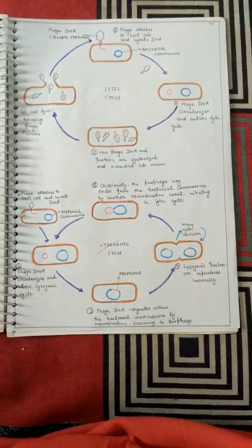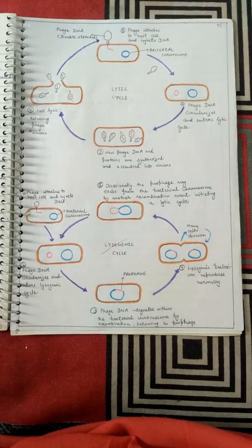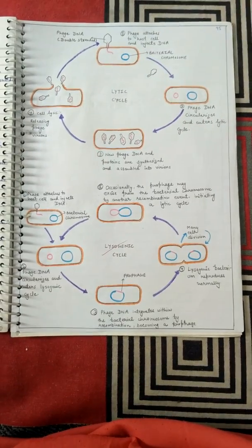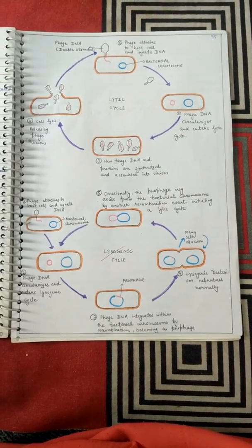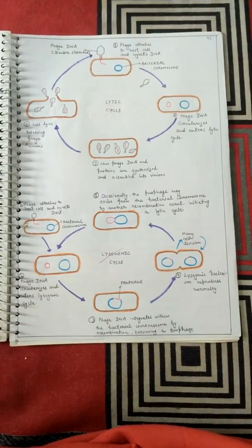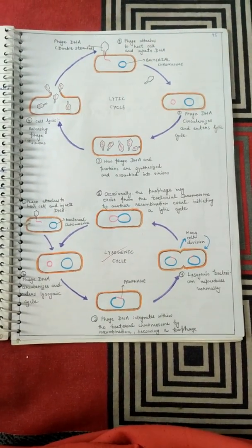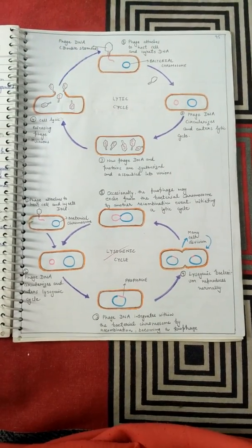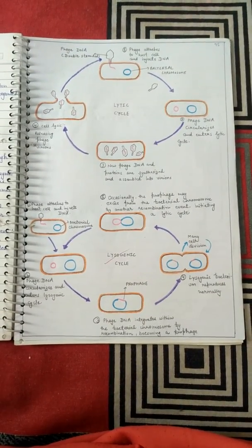The lytic cycle is also known as the virulent phase, because in the lytic cycle the bacteriophage feeds upon the bacteria and lyses the cell. In the lysogenic cycle, however, there is no lysis of the bacterial cell — only the multiplication of the bacteriophage occurs. That's why it is known as the lysogenic cycle.